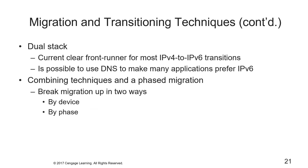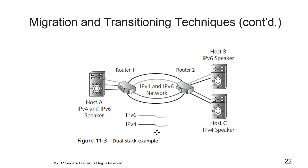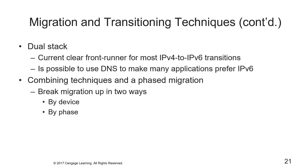The clear front runner for most IPv4 to IPv6 transition is dual stack. It's possible to use DNS to make applications prefer v6, and you can combine techniques for a phased migration. In a dual stack setup, you have both IPv4 and IPv6 devices on a network. When implementing dual stack, you have to break up your migration by device and by the phases that you define.